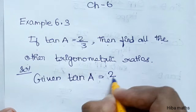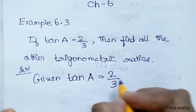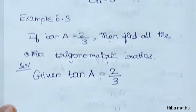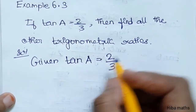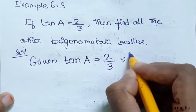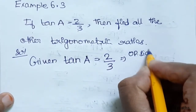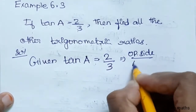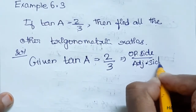Tan A is equal to 2 by 3. Tan A is equal to opposite side by adjacent side.